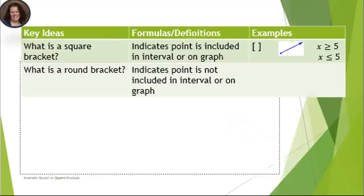So what about a round bracket? Well, it indicates the point is not included in the graph or the interval. There's our round parentheses, there's the open circle. So this point in this line segment is not included, but everything up until that point.